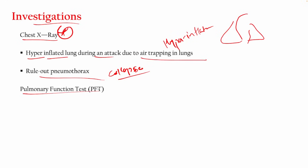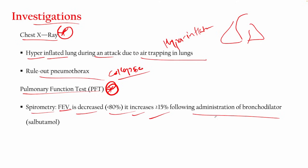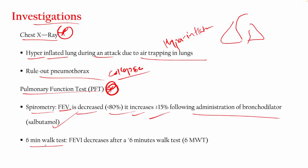You can also go for a pulmonary function test — spirometry. FEV1 is decreased below 80% and it increases by 15% or more after administration of a bronchodilator such as salbutamol. FEV1 also decreases after a six-minute walk test.